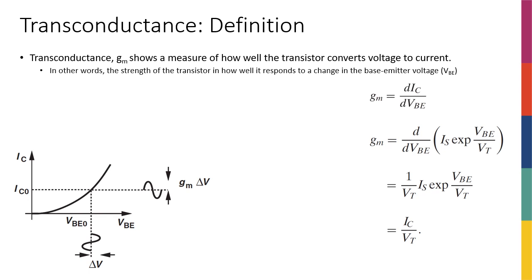Transconductance is the strength of our transistor — how well it responds to changes in the base-emitter voltage, or basically the measure of how well the transistor converts voltage to current. Visually, on the same exponential plot: imagine you have a delta V — a very small sinusoidal signal — and I want to know how those sinusoidal changes in VBE are translated to current changes in the collector. GM is defined as delta IC over delta VBE, or the derivative of IC with respect to VBE.